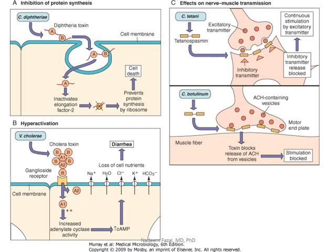How do bacteria cause cell death? Take C. diphtheriae — it has a toxin that is endocytosed, and it inactivates elongation factor 2 (EF-2), which is required for protein synthesis. If EF-2 is inactivated, there is no protein synthesis, and the cell dies. That is the mechanism of pathogenesis for C. diphtheriae.